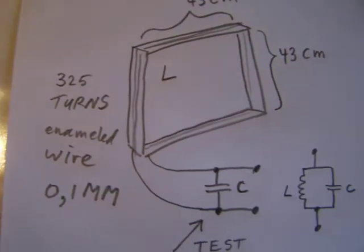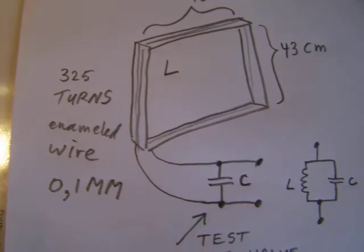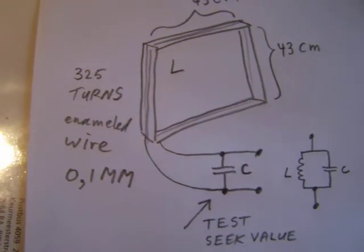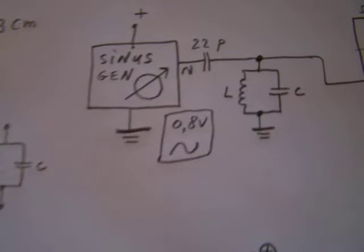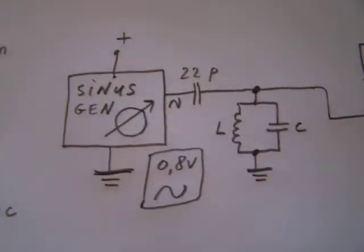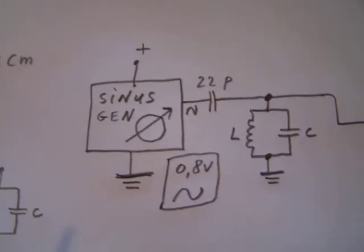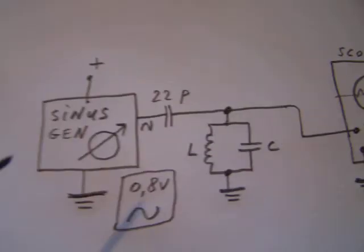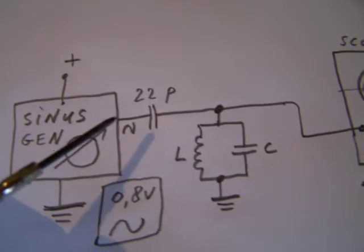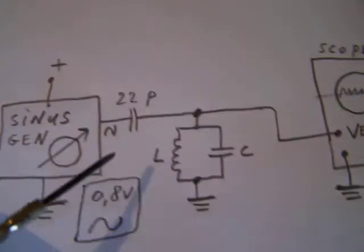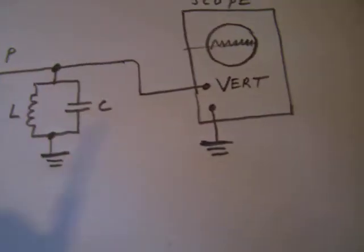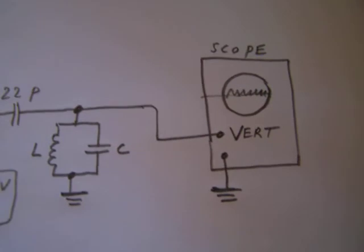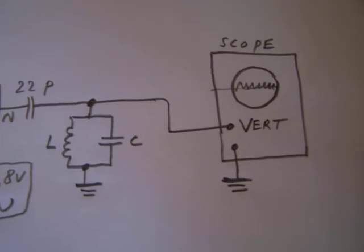So the first thing I have to do is to test the coil on what frequency it's on. I've done this with my sinus generator that generates frequencies between 20 Hertz and 500,000 Hertz. I coupled the coil and the capacitor with 22 pF, and over the coil I put the scope so I can search on which frequency this coil resonates.